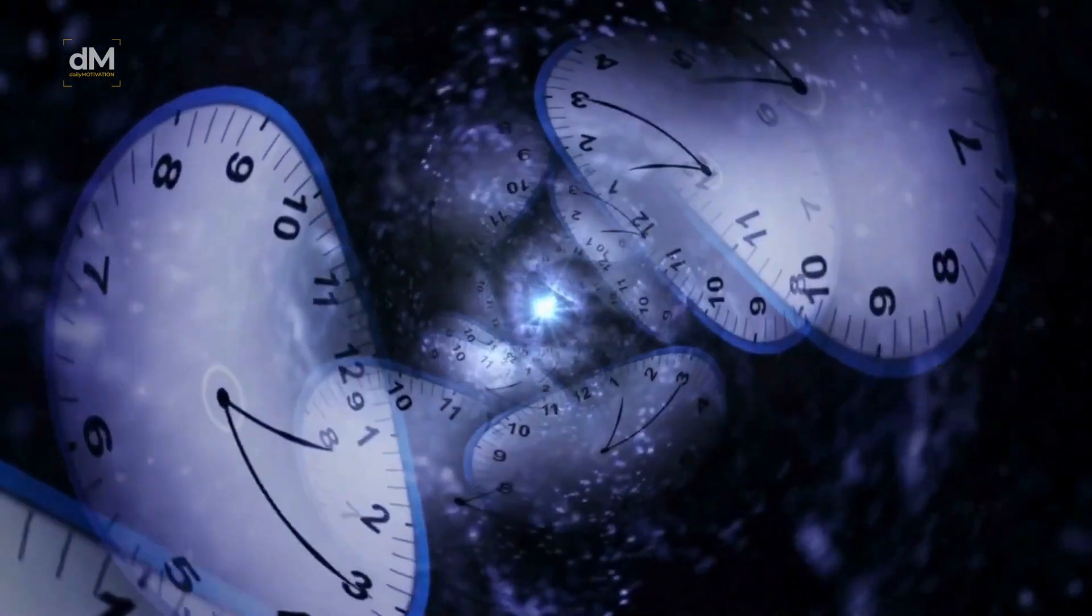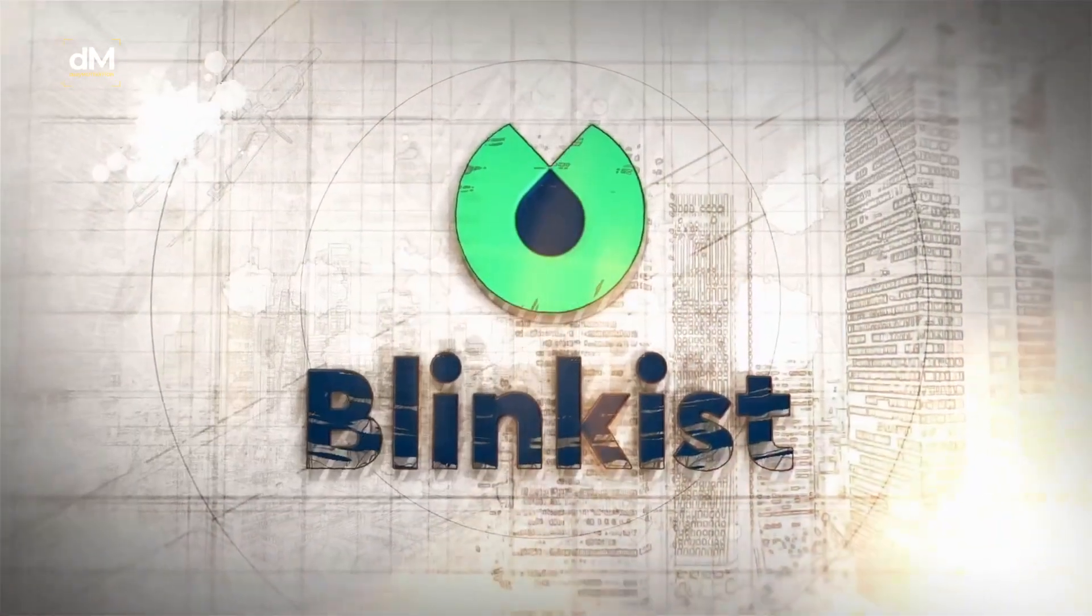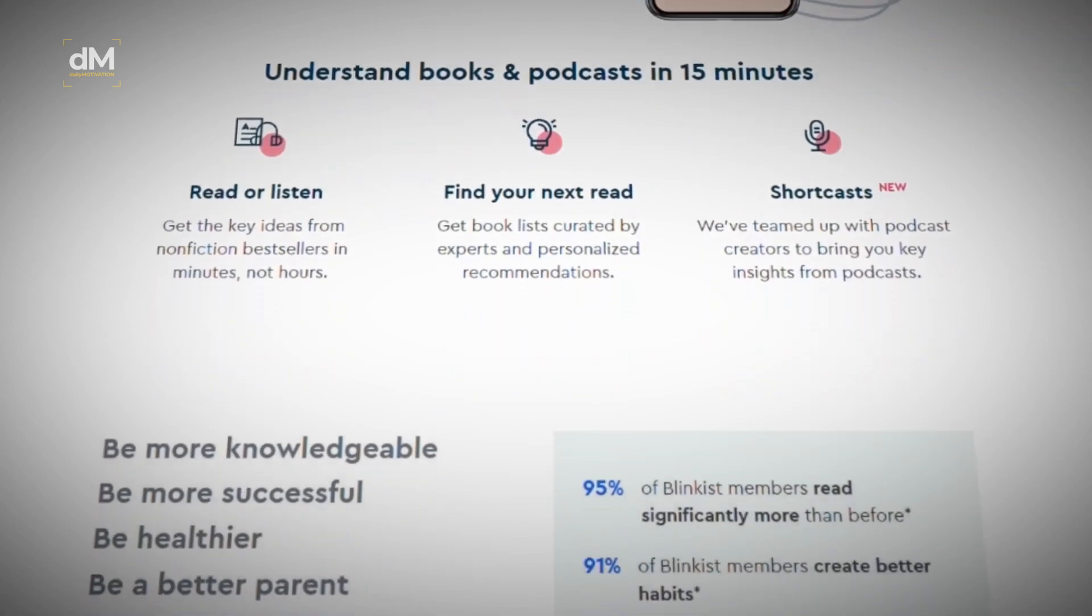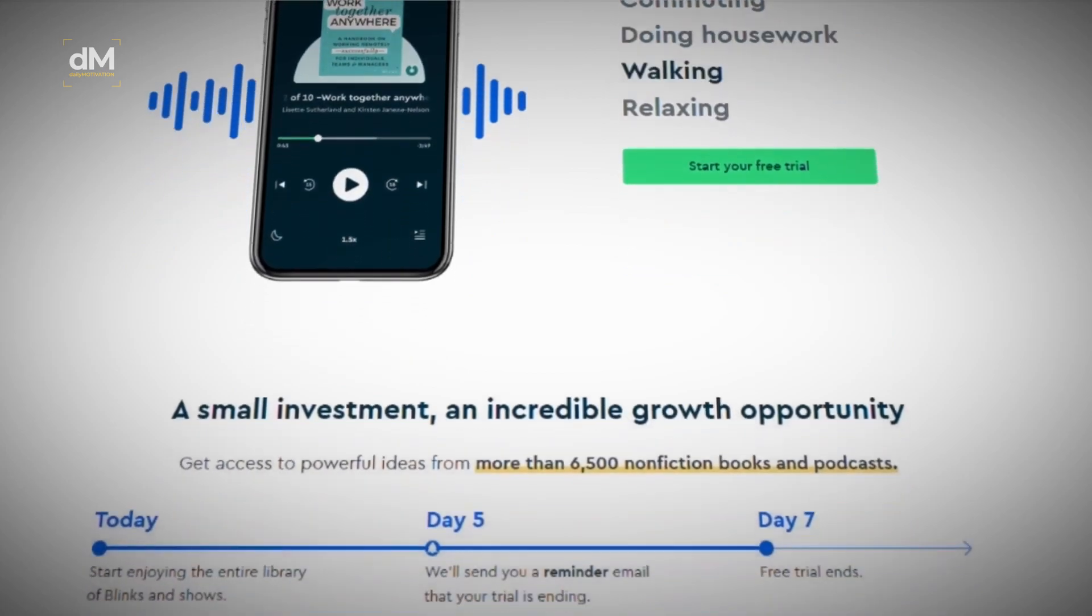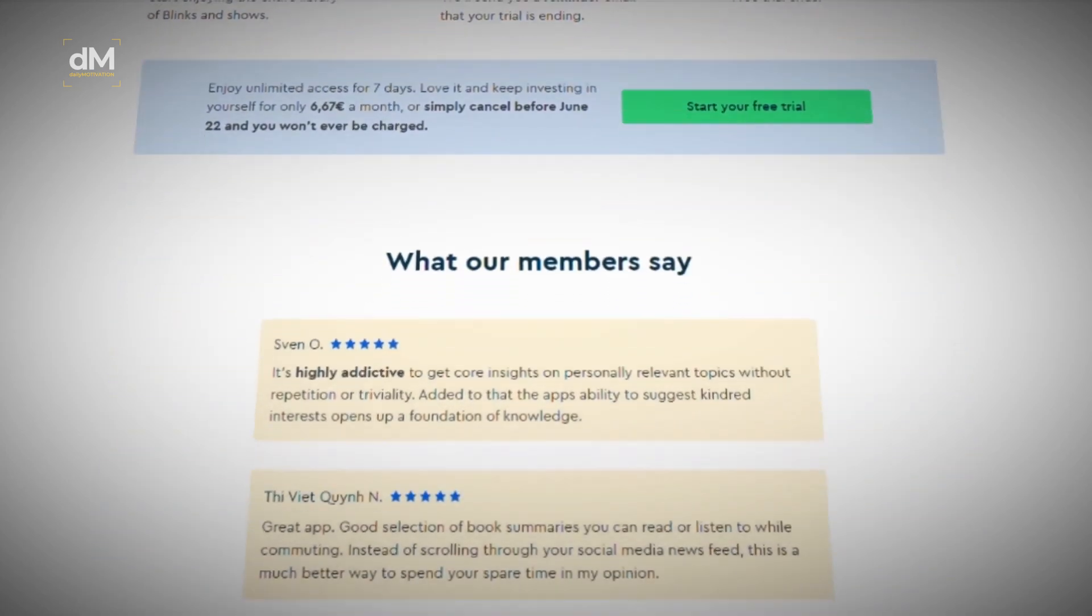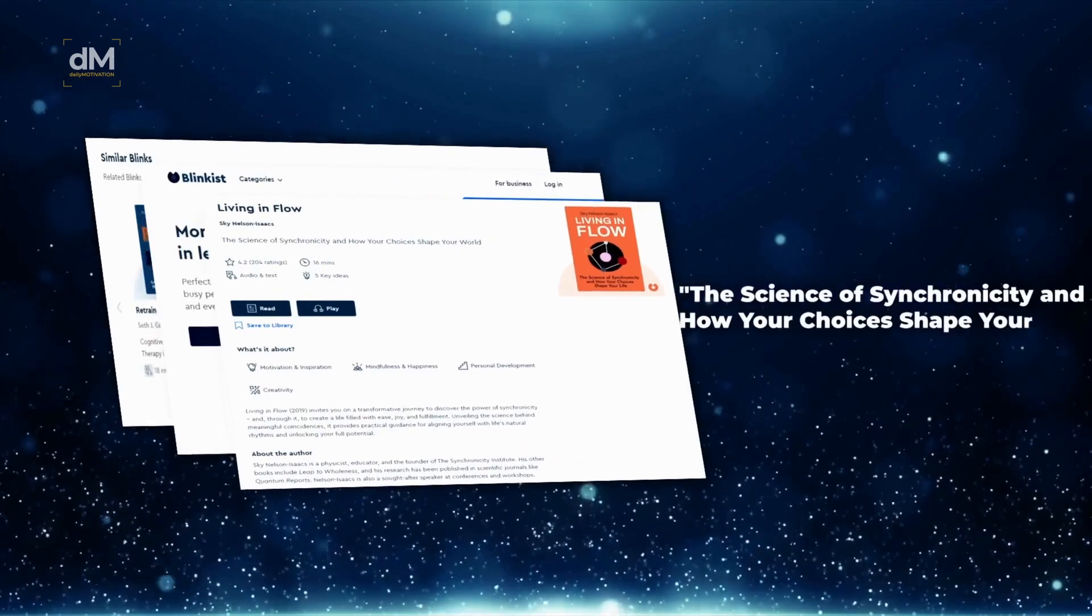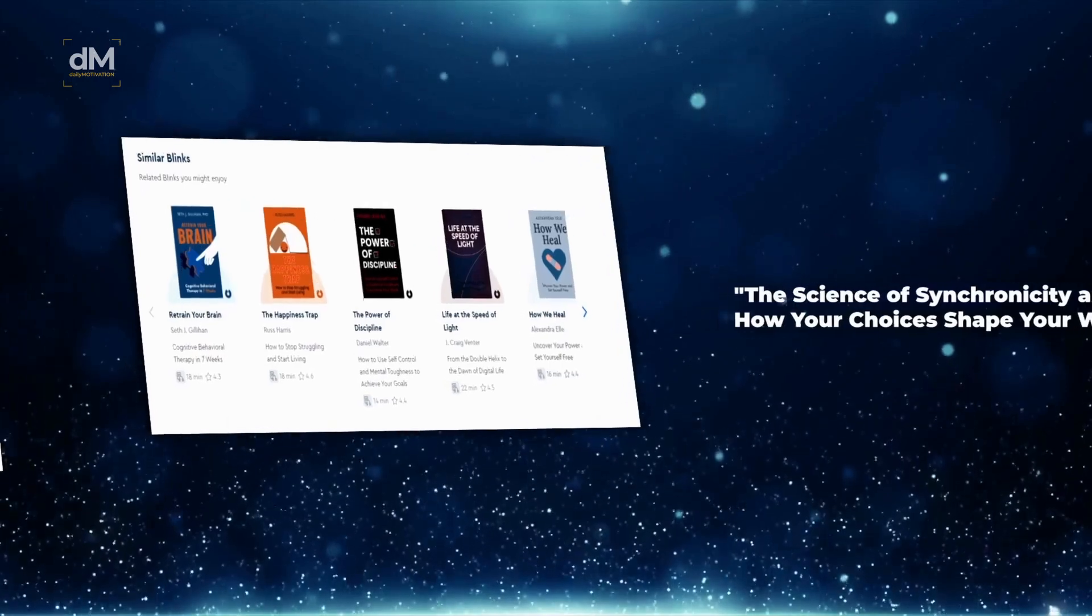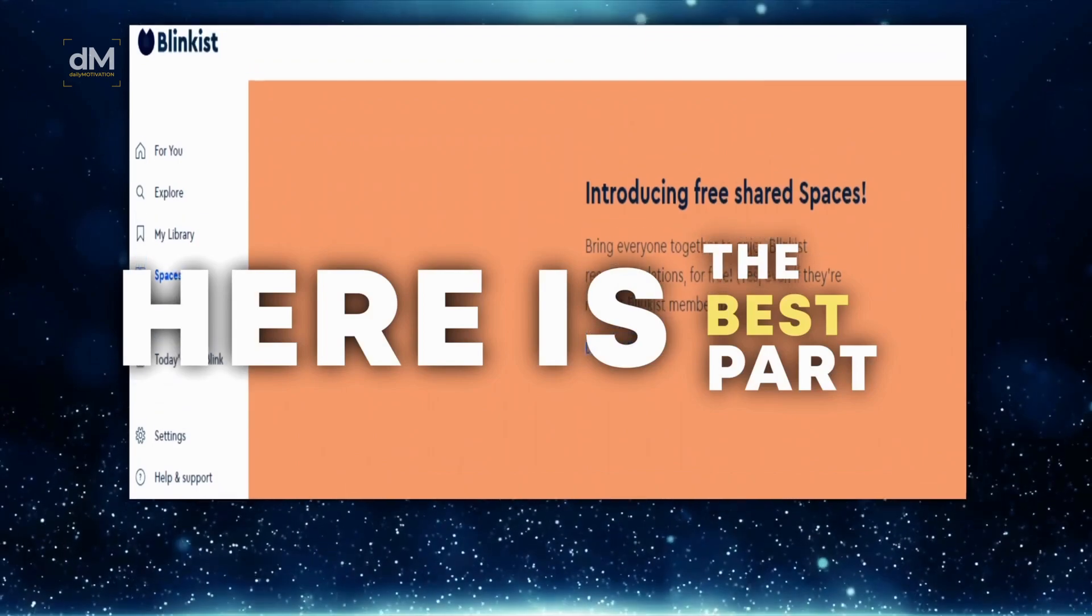Time is the new luxury, and we understand that it's not always possible to read every book that piques your interest. That's where Blinkist comes in. This fantastic app is a game changer for busy bookworms, allowing you to absorb the key insights from over 5,500 non-fiction books and podcasts in just 15 minutes. Right now, we're absorbed by Sky Nelson Isaac's enlightening work, the science of synchronicity, and how your choices shape your world. This physicist's riveting exploration is just one of the countless titles at your fingertips with Blinkist.